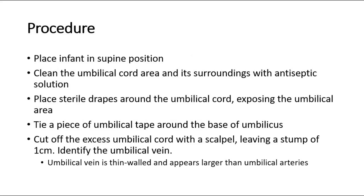For the procedure, place the infant in supine position. Clean the umbilical cord area and its surroundings with antiseptic solution. Place sterile drapes around the umbilical cord, exposing the umbilical area. Next, tie a piece of umbilical tape around the base of the umbilicus. Cut off the excess umbilical cord with a scalpel, leaving a stump of 1 cm.